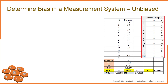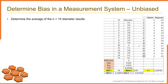To further confirm that there is no bias present, the engineer needs to construct a 95 percent confidence interval around the average diameter. If the confidence interval includes 4 millimeters — our reference value — the engineer can assume there is no evidence of bias being present.